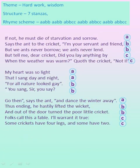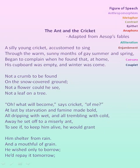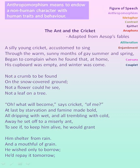The rhyme scheme continues: AABB, AABBCC, AABB, and in the last stanza it is AABBCC. Now let us see the poetic devices used in the poem. The whole poem can be called anthropomorphism, which means to endow a non-human character with human traits and behavior.